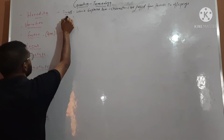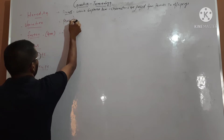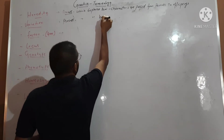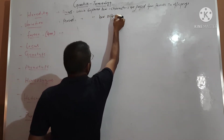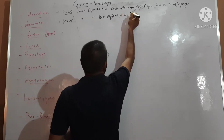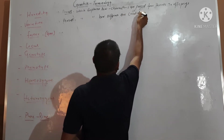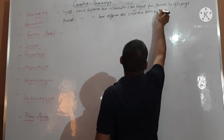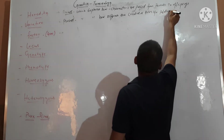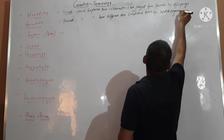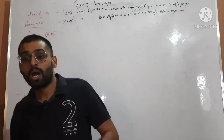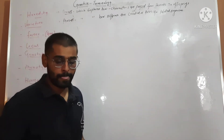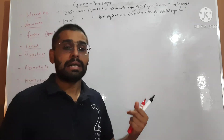Next is variation. It is a process or phenomenon which explains how differences are created or arise between related organisms. So this process explains how related organisms are in many aspects different from their parents or another related organisms.